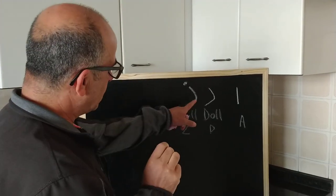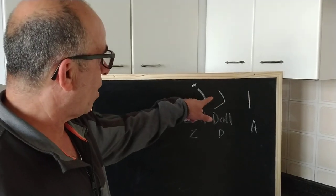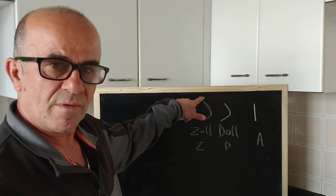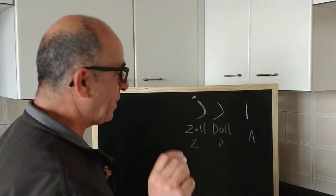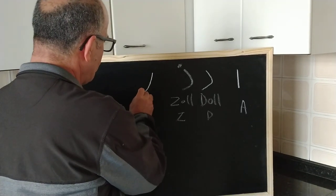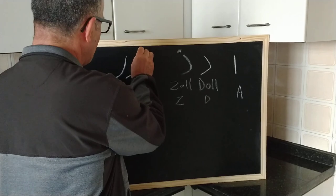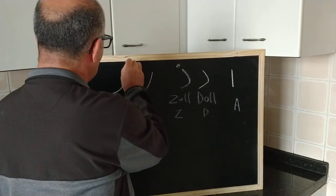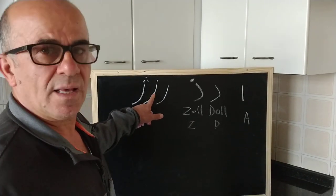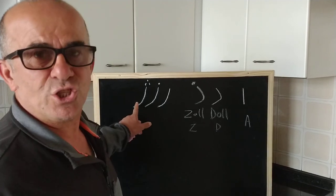This is the second group. They look the same — they are the same shape. The only difference is the dot at the top: Dal becomes Zol with a dot. And then we have Re — R — and Ze, which is again Z, and Ge — G.